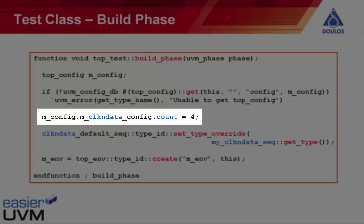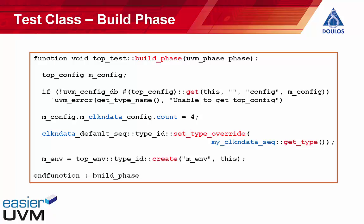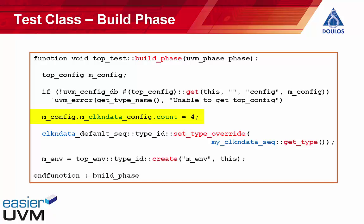This build phase method is getting our top-level configuration object out of the configuration database. Within that top-level configuration object there's a sub-configuration object for one of our agents — the clock and data agent — and in the test we're assigning a value to the count variable within that configuration object. The methodology is to write a tree of nested configuration objects into the configuration database from the top-level module, and then within the test retrieve that tree and make any adjustments specific to this given test. If we don't make adjustments, the configuration object will run with its default — possibly randomized — settings.